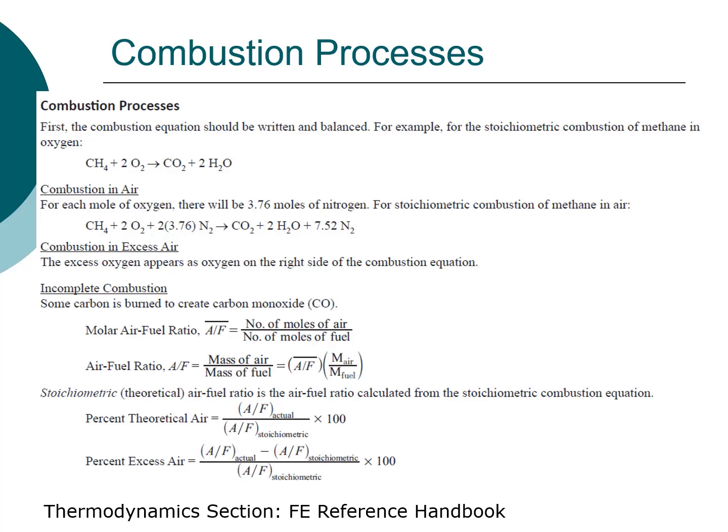The information here is from the thermodynamics section. Note that you're provided with the reaction equation for the stoichiometric combustion of methane, followed by the combustion in air. Notice the addition of nitrogen in a molar ratio of 3.76 moles of nitrogen to 1 mole of oxygen. The equations for both the molar air-to-fuel ratios are provided along with the air-to-fuel ratio.